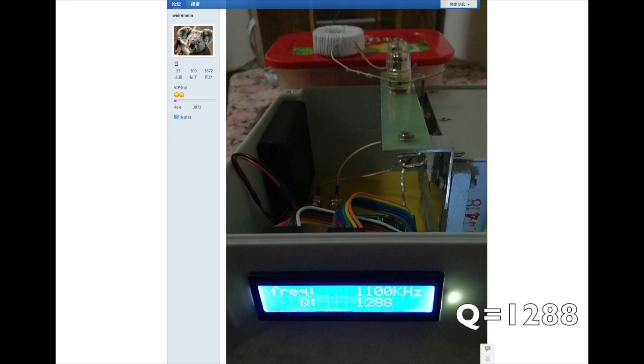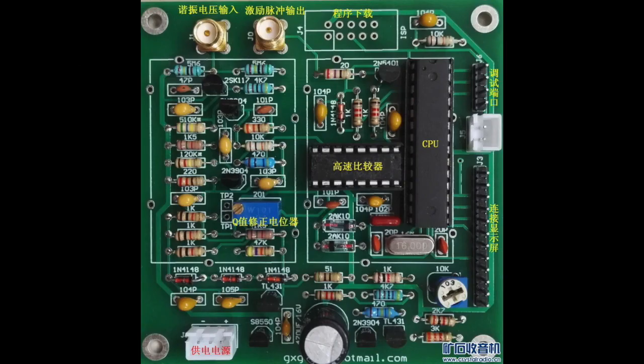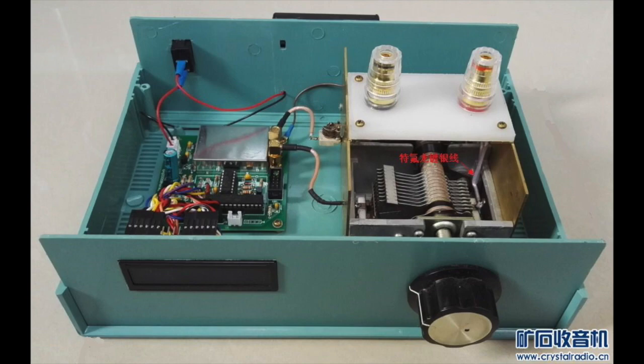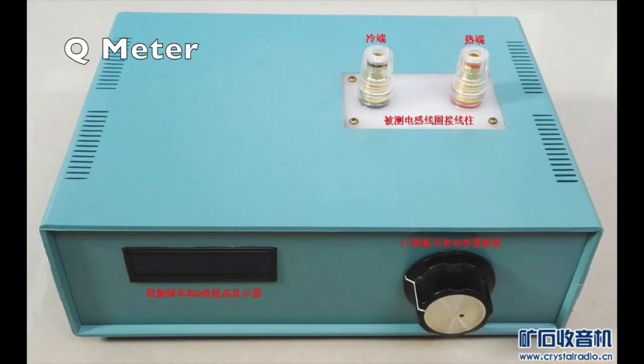The Q-meter in the diagram is one of the new inventions by the China crystal radio hobbyists. They use microcontrollers to calculate the Q-factor. I'll make a video to introduce this Q-meter once I finish testing my own.